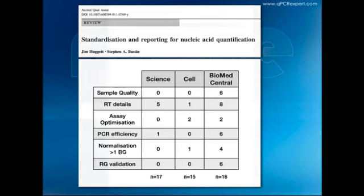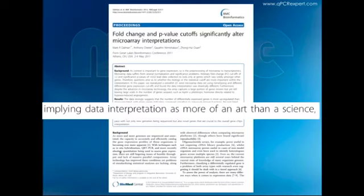Data interpretation has been called an art rather than a science—and it is an art because if you decide to normalize against a single reference gene, the science stops there and you can't really rely on the data. If you have a hundredfold difference in expression of your target gene, you probably don't need to worry about normalization. But in general, if you're using biopsies and animal samples, you really need to worry carefully about your reference genes.